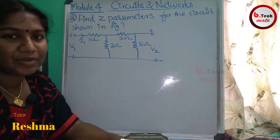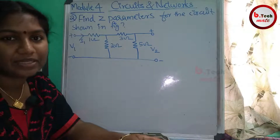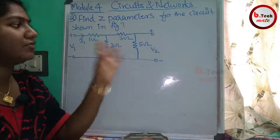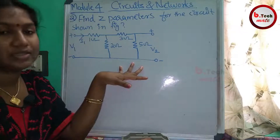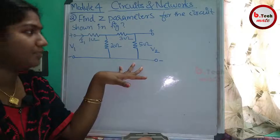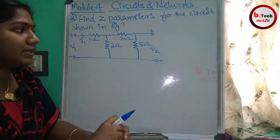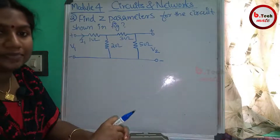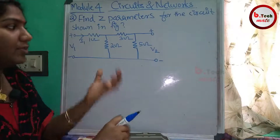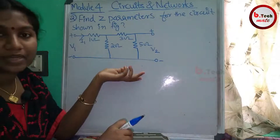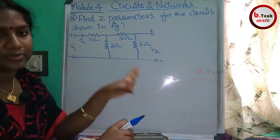The next problem involves the Z-parameters, also called set parameters. We have a T-network. We have the Z-parameters here — Z1 and Z2. We will now determine the Z-parameters from the set parameters by opening the output port.